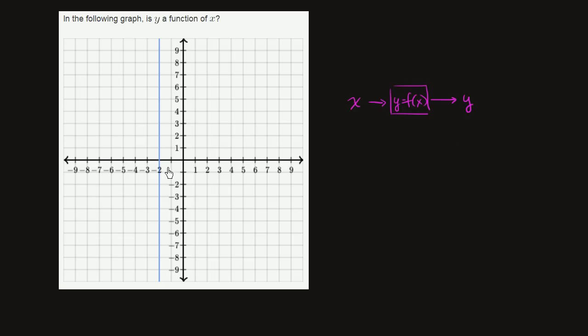So let's see if for this graph, whether for a given x, it spits out exactly one y. Well, the function seems to be only defined, so the domain of this function is x is equal to negative 2. That's the only place where we have a definition for it. And if we try to input negative 2 into this little black box, what do we get?